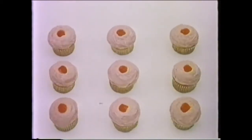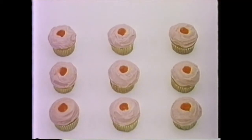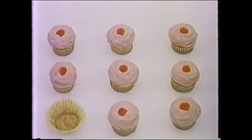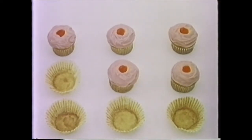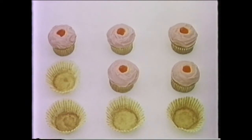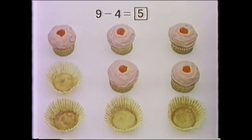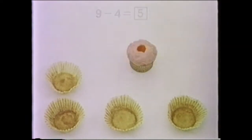Now let's do some more subtraction. But this time, let's find out how many were taken away instead of how many are left. How many cupcakes do we have? One, two, three, four, five, six, seven, eight, nine — nine cupcakes all together. And let's say that someone comes in and eats some of the cupcakes. How many cupcakes do we have left? One, two, three, four, five — we have five cupcakes left. How many were eaten? Just count the empty wrappers. One, two, three, four — there are four empty wrappers; four cupcakes were eaten. So nine minus four equals five. Nine cupcakes minus the four that were eaten means five are left.